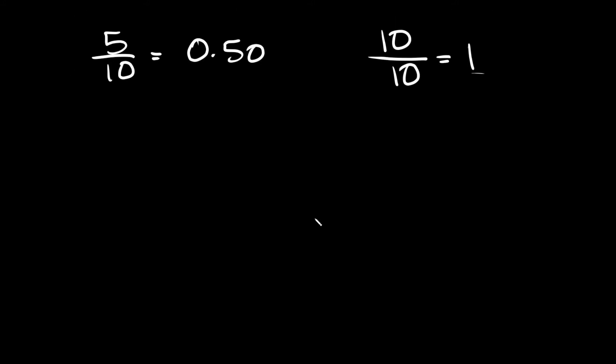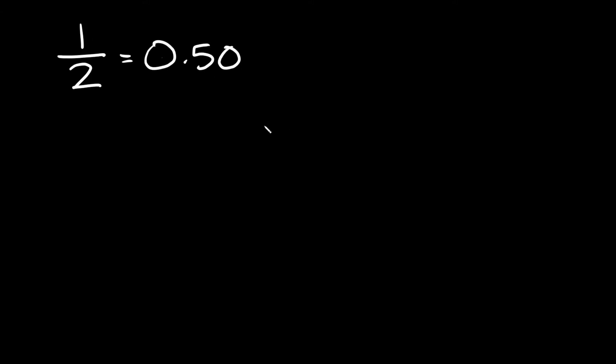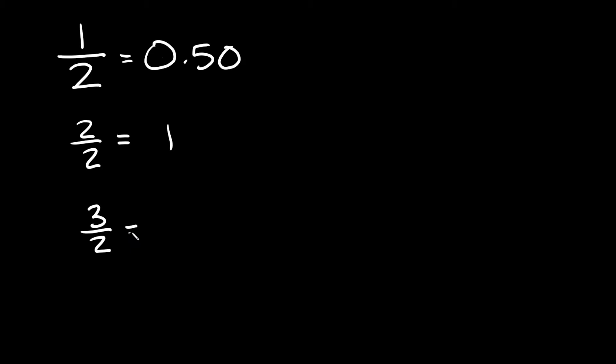Another one you might see is the number two in the denominator. The trick here is to think of the top number as how many fifty-cent pieces you have. So one over two is 0.50, or fifty cents. Two over two is one dollar, or simply one. Three over two would be a dollar fifty. Four over two — you can probably do that in your head — that's just two. And five over two would be two dollars and fifty cents.